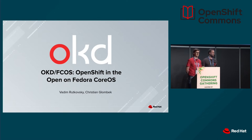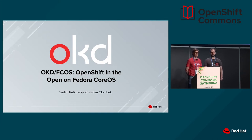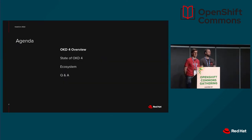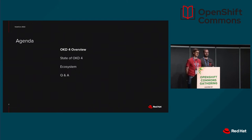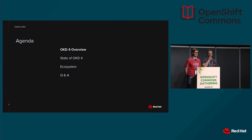My name is Vadim Rutkowski. I work for Red Hat in the Edge group. Today we join forces to speak about our community distribution which is called OKD. We'll start with doing an overview on what OKD 4 is, then move on to more detailed features and its current state of the union for OKD, and then talk about how OKD fits into the whole ecosystem and what other features it enables.